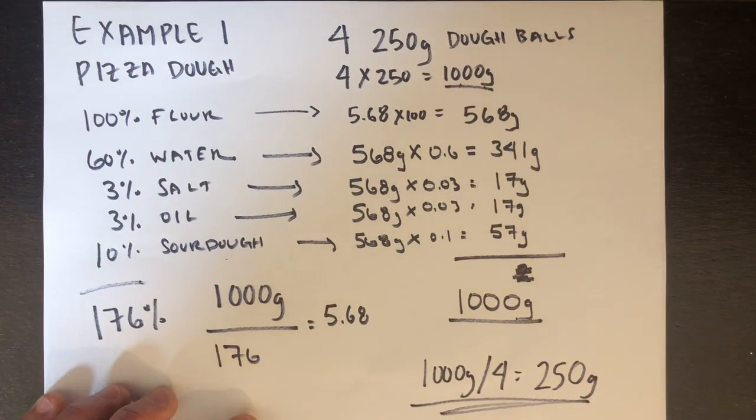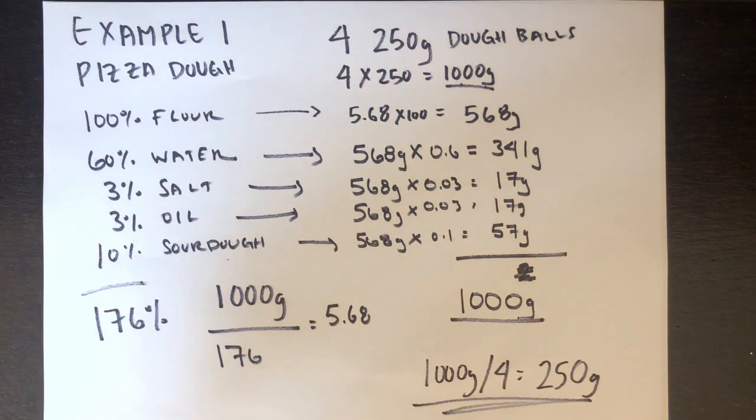So there you go. How to develop a recipe for four 250 gram dough balls based on a certain percentage recipe. I'll leave this here so you can screenshot it and we can go on to our second example.